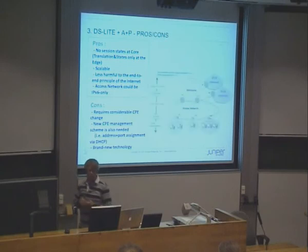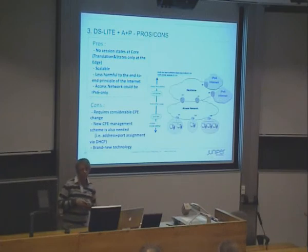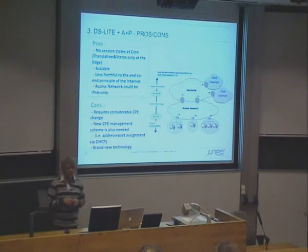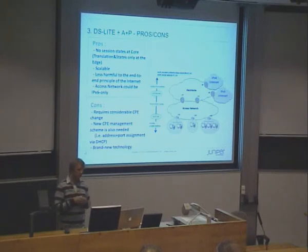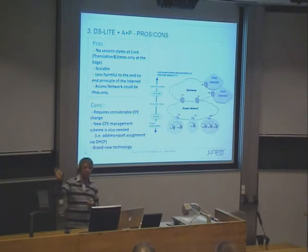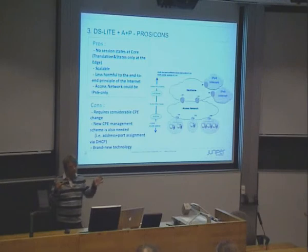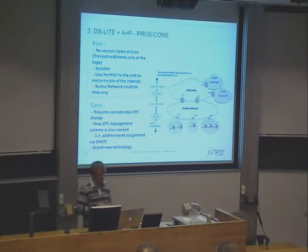Going back to the previous slide, DS Lite and these approaches would mean you need to upgrade the CPE device. I haven't seen many CPE devices that actually support DS Lite. With the latest technologies, the idea is that you borrow bits — because you have 16 bits and around 65,000 ports for applications — you could borrow a couple of bits to be used per customer. Using these extended bits from the port combined with the IP address, you could use the same IP address with different port values for different customers, effectively reusing IP addresses and making them more unique.